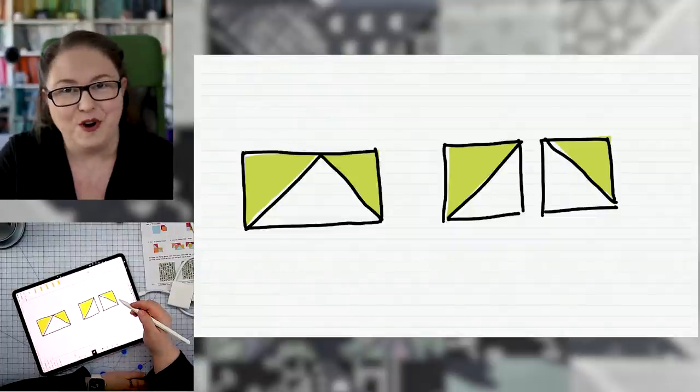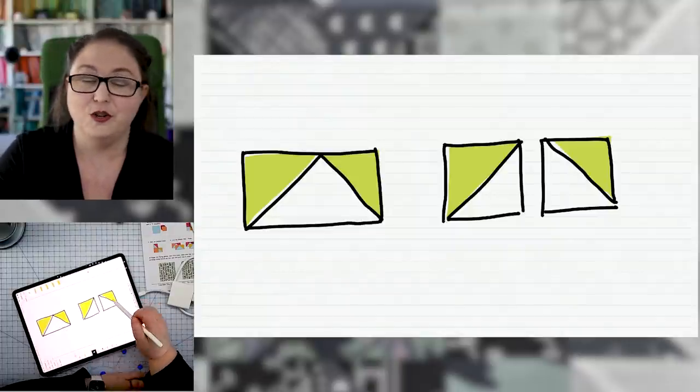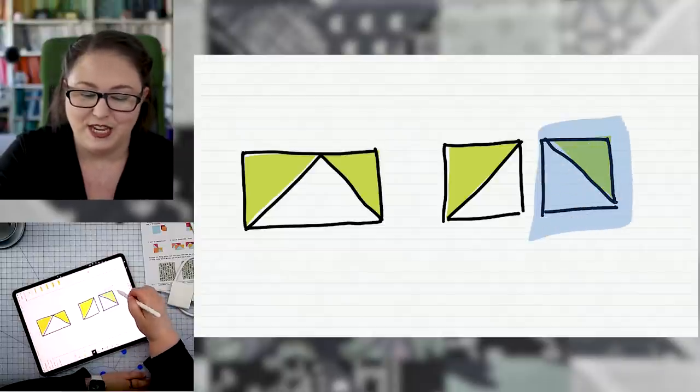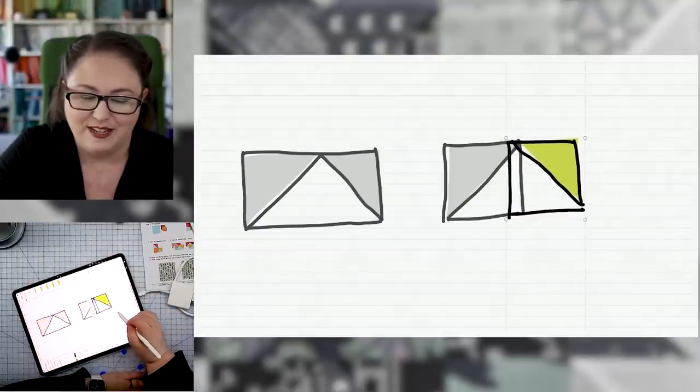So if you've done a little quilting before, then you may notice that our flying goose unit looks a lot like two half square triangle units that are sewn together.